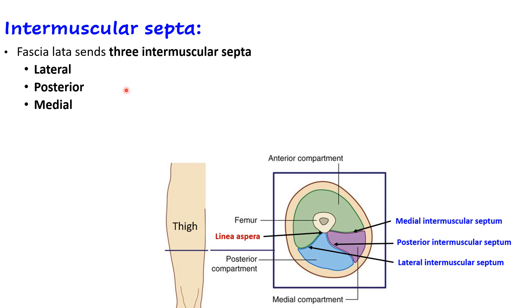The last modification is the intermuscular septa, present in the thigh as in the arm and forearm. In the thigh there are three muscular compartments, so there are three intermuscular septa. On a cross-section of the thigh, the femur with its posterior sharp linea aspera is visible. The three septa are: medial intermuscular septum, posterior intermuscular septum, and lateral intermuscular septum — all going to the linea aspera.